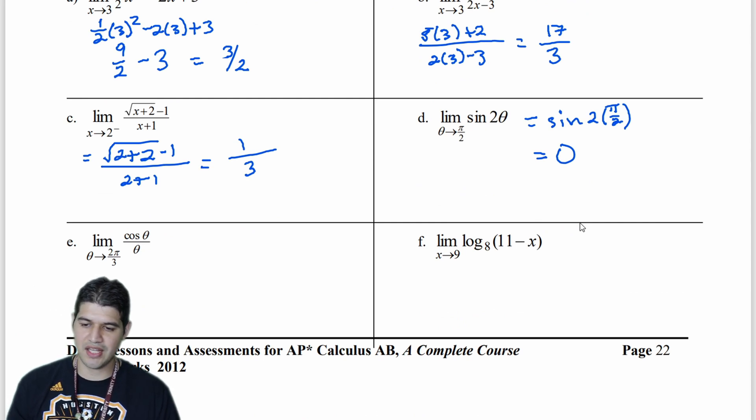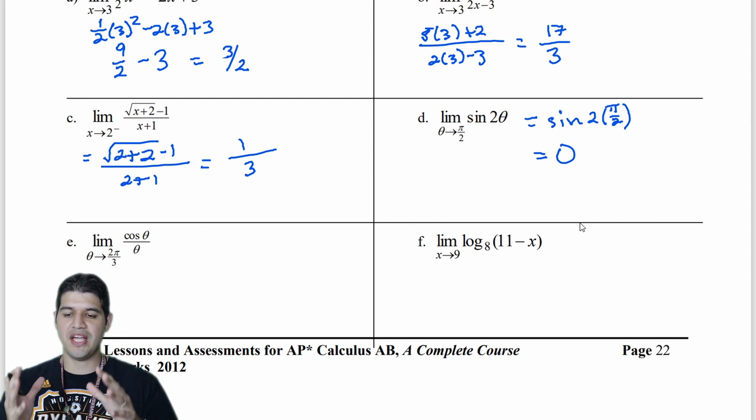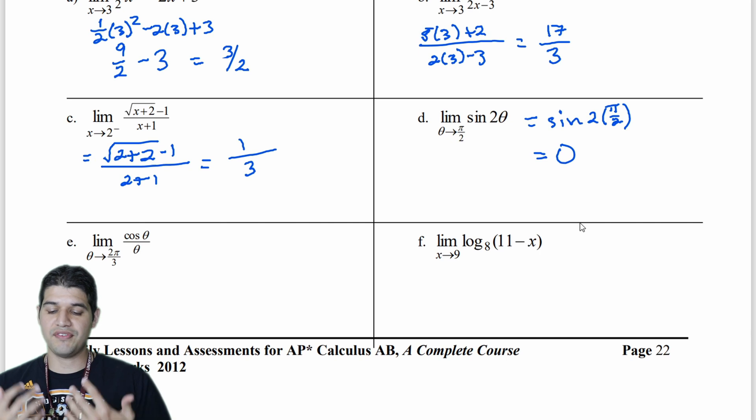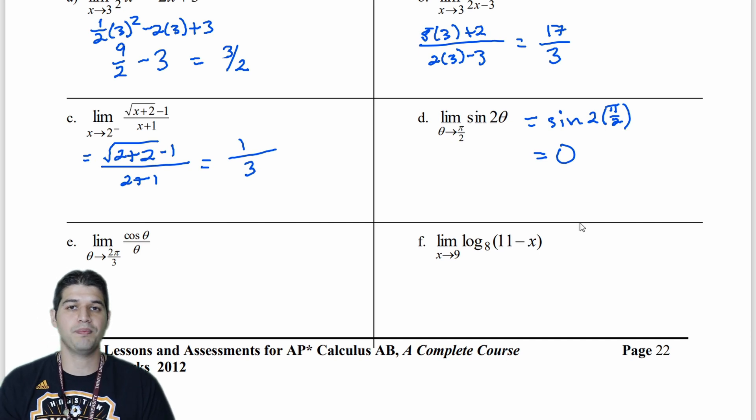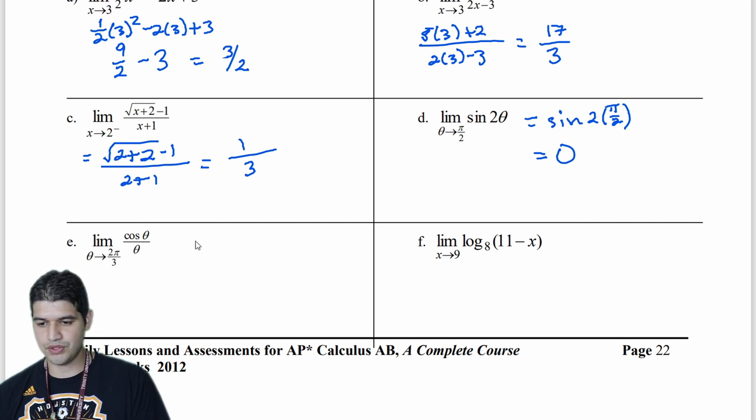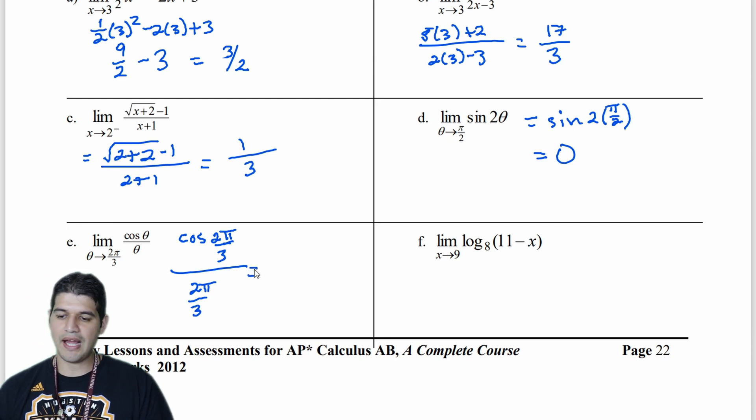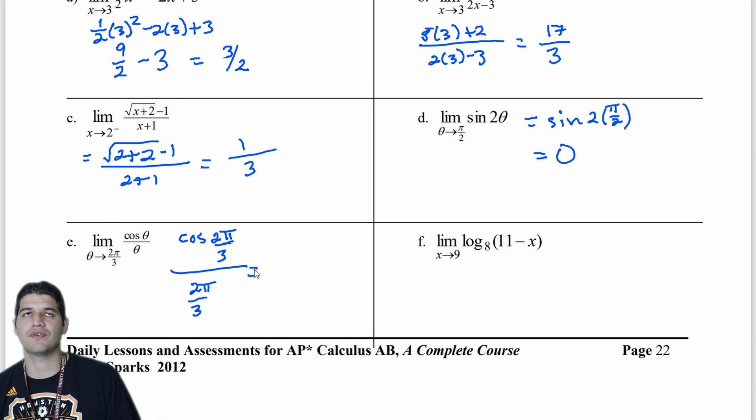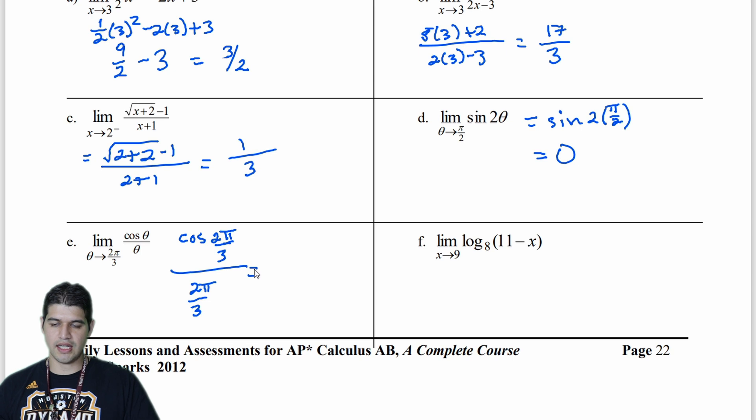Now over here, we have cosine of theta on theta. So the limit of that function as theta approaches 2 pi over 3. All right, substitute 2 pi over 3 in. So cosine of 2 pi over 3, all divided by 2 pi over 3. So let's see what happens here. So cosine of 2 pi over 3. Let me think about that. So that's a 1 third, but it's over on the negative side. So I know it's going to be negative.